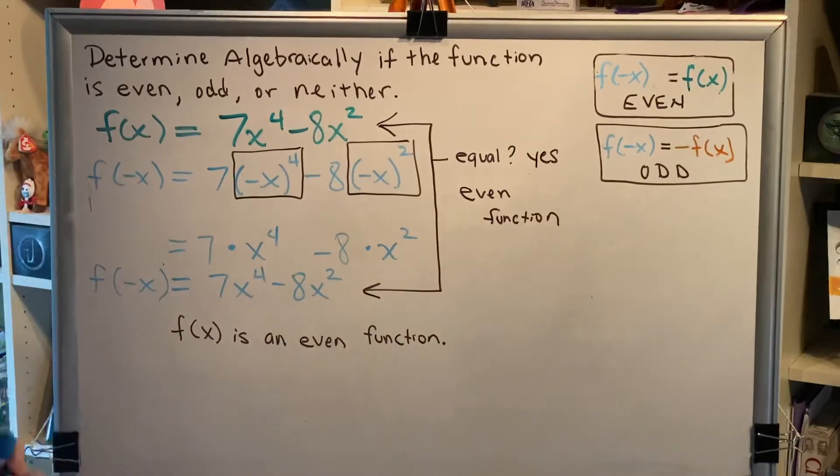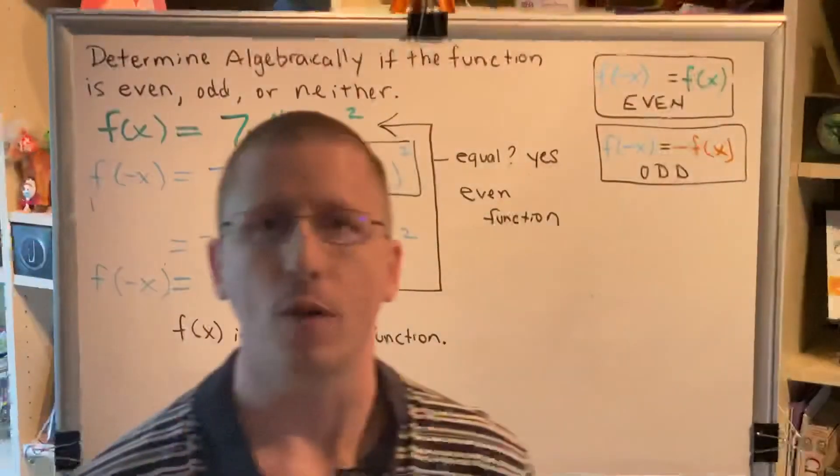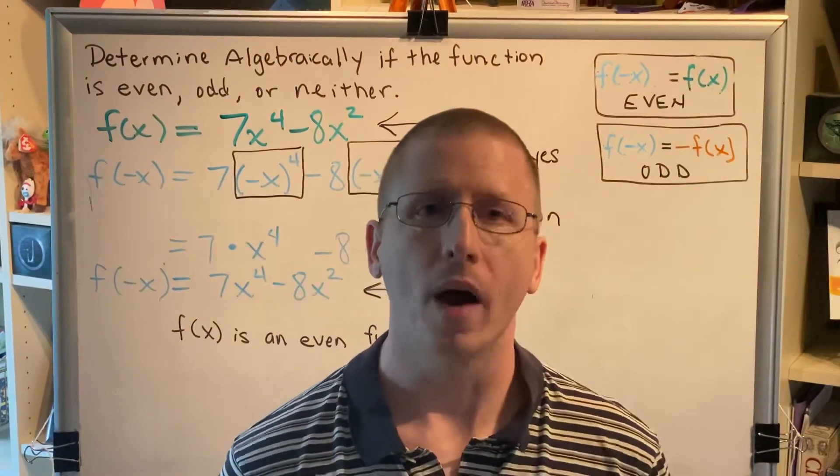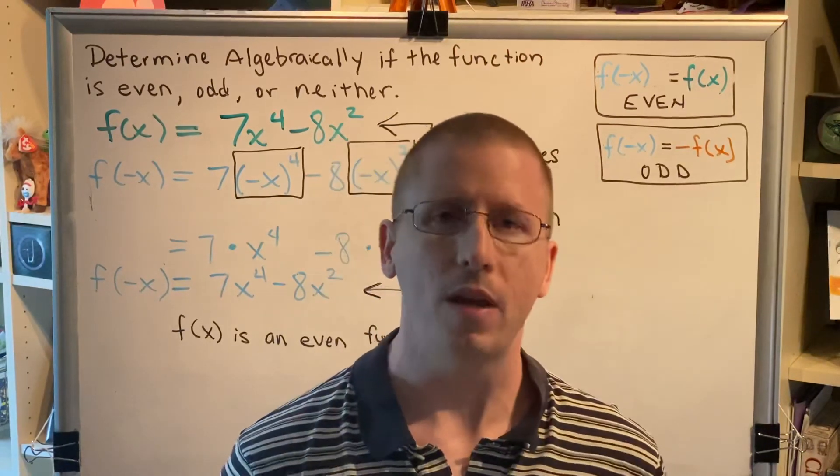Now, you might have noticed that once I determined that it was an even function, I did not test to see if it was an odd function. And you might arrive at the conclusion that if something is even, it cannot be odd. And if something is odd, it cannot be even.